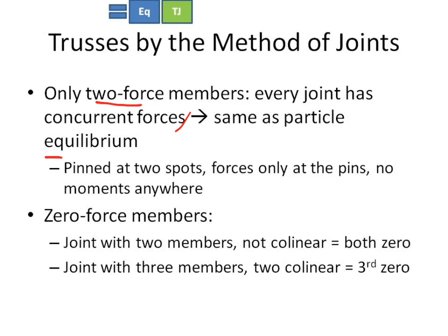You do need to memorize this: a two force member is something that is pinned at two spots, has forces only at the pins, and doesn't have any moments. Another thing to remember is zero force members. If you have two members and they're not collinear, then they're both zero. If you have a joint with three members, two of them are collinear, then the third has to be zero. This is where something comes into a joint at a T—this one has to be zero.